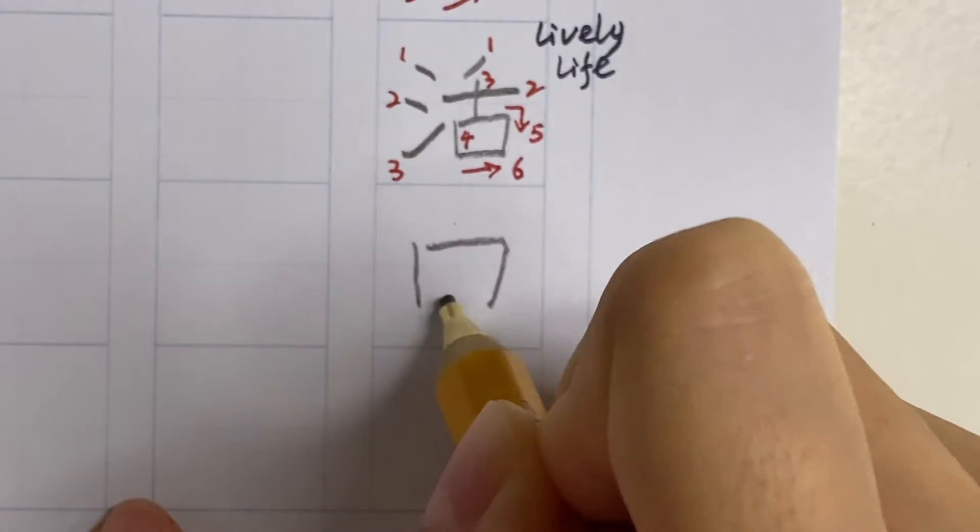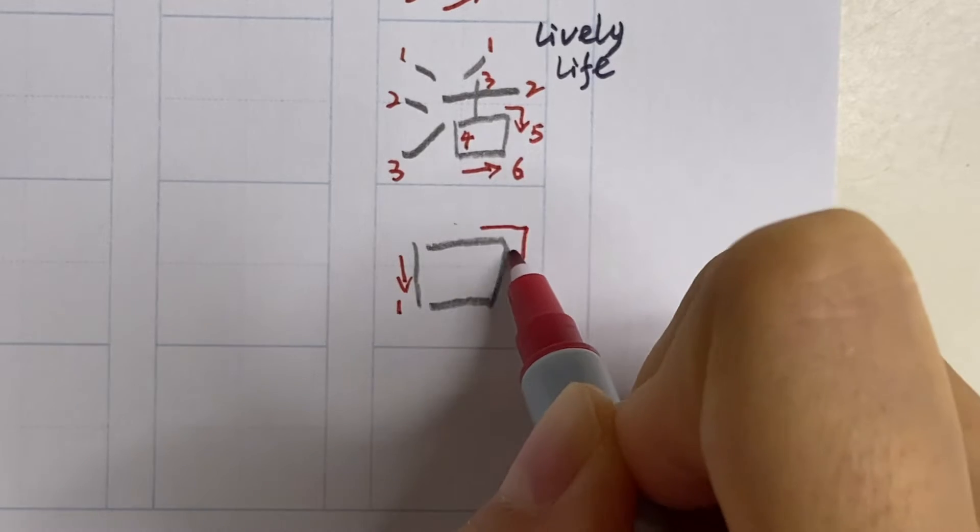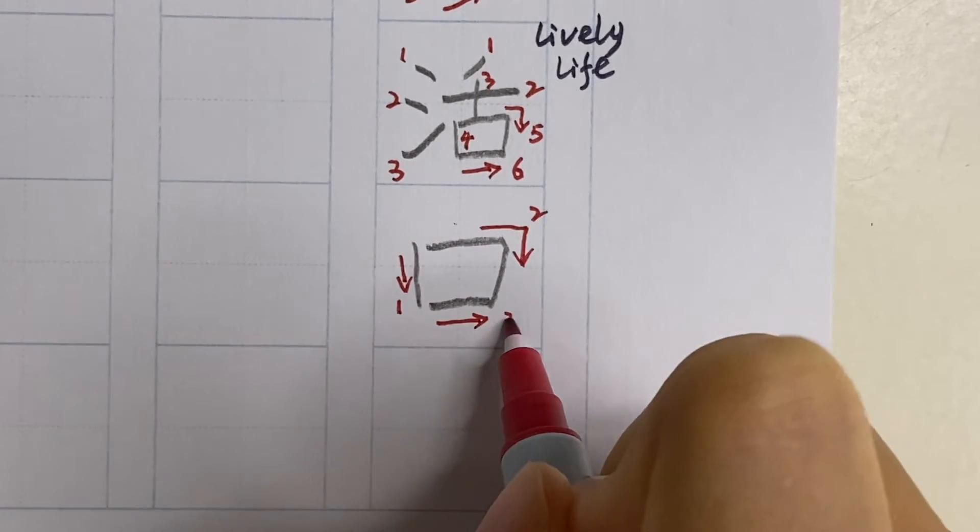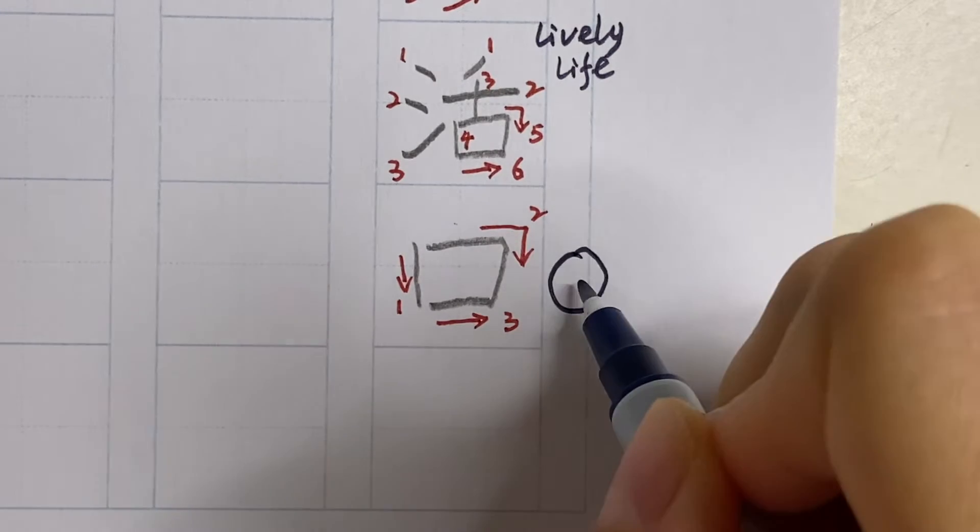The next common component is the box, which means the mouth, kuchi. So remember we have only three strokes. The second one is a fold. The shape is just like an open mouth.